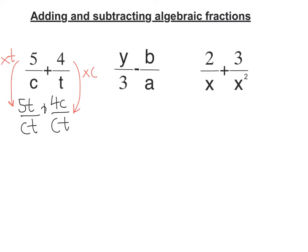Now I have a common denominator. I can add the tops together and 5T plus 4C over CT. And then 5T plus 4C does not simplify. So there is my answer. Let's look at the next one.